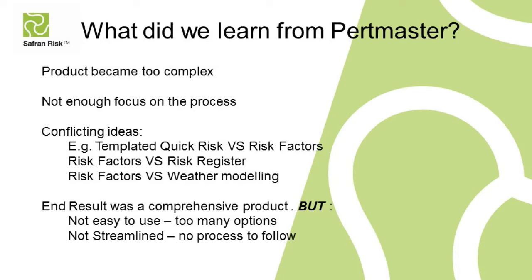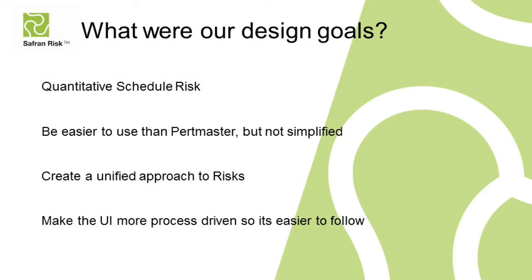In short, the end result was a comprehensive product, but one that's not too easy to use because it's got too many ways of doing things and not streamlined enough because there isn't a process to follow. So what were our design goals for Saffron Risk? Well, obviously Saffron Risk is a quantitative schedule risk tool, but one of our primary goals was to make it easier to use than PertMaster, but not simplified. We were looking to create something that has the same depth that PertMaster had, but done in a slightly more unified way.